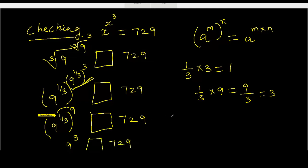729. And we know very well 9 cubed is 729. 729 equals 729.